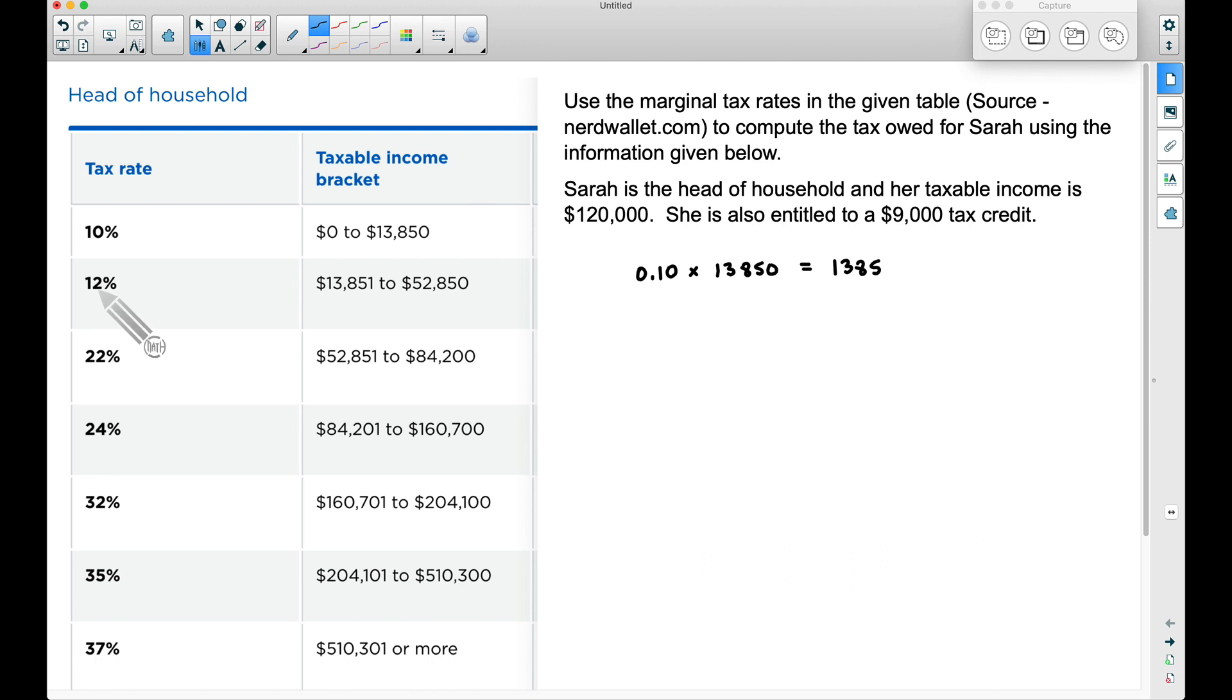So the next tax bracket, if you will, is 12%. What she's going to do here is pay 12% of any amount between the $13,850 (which is $13,851) up to $52,850. And again, she made more than this, so she is going to pay 12%, again using a decimal.